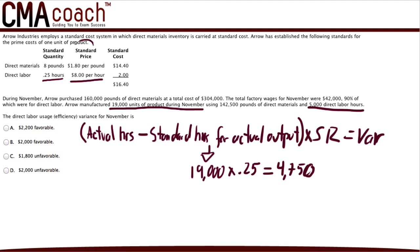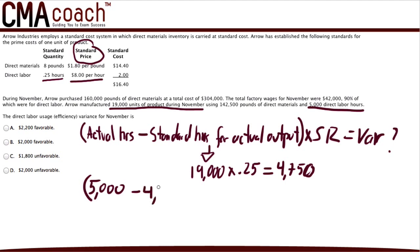So the direct labor efficiency variance — the question we're asked to solve — is calculated using the formula: actual hours (5,000, which is given) minus standard hours for actual output (4,750, which we calculated), times the standard rate of $8 an hour. Doing the math, this equals $2,000 unfavorable.